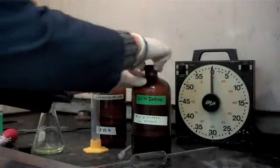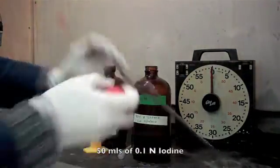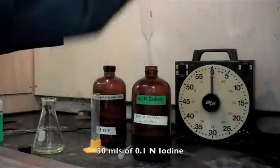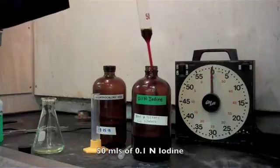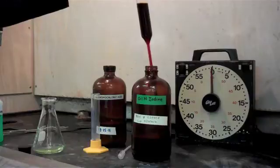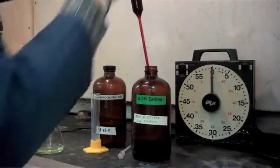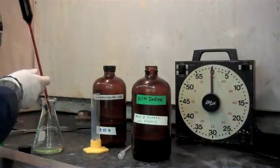And then from there we're going to pipette in, once again pipetting for accuracy, 50ml of 0.1 normal iodine. We're going to add that right to our flask.